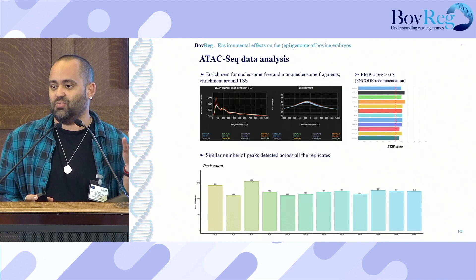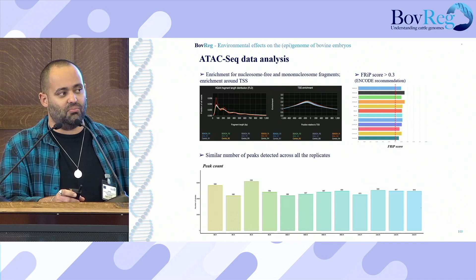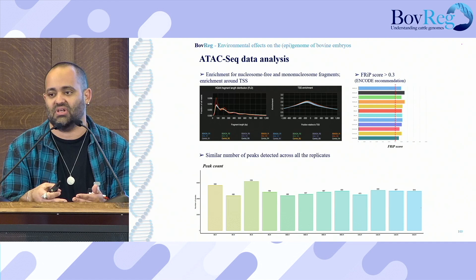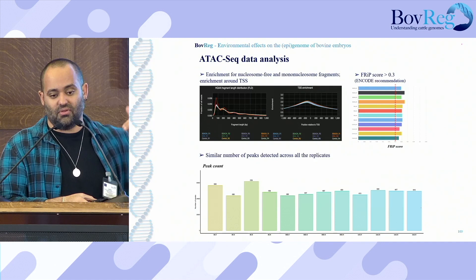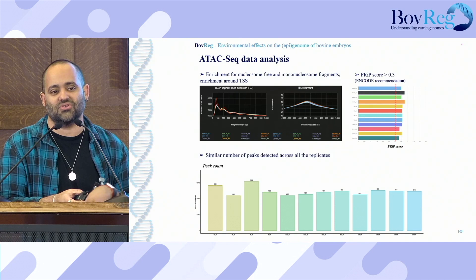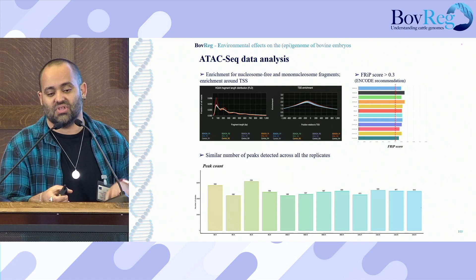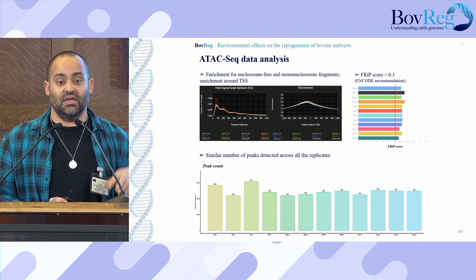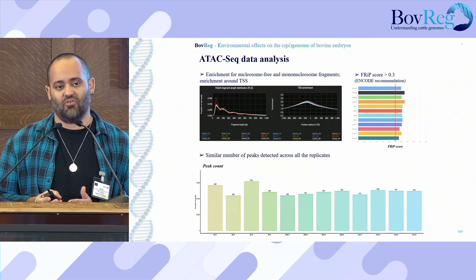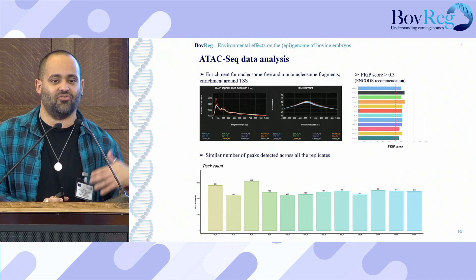Looking at the second graph, we have enrichment close to the transcription start site (TSS) of genes, and indeed we see that enrichment for all samples in this experiment. The FRIP score, shown in the colorful graph, shows that the majority of reads are mapping within ATAC-seq peaks, with scores higher than 0.3, following ENCODE recommendations. The number of peaks is also pretty consistent across the different replicates, allowing us to perform differential accessibility analysis.